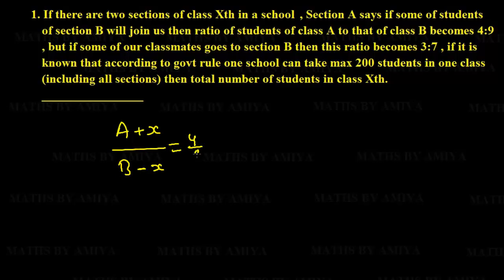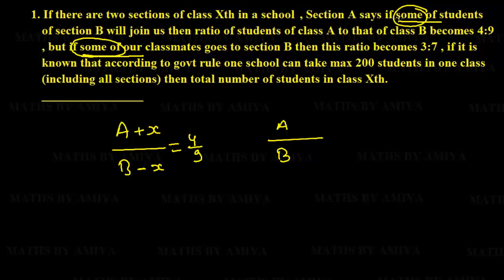But if some of our classmates go to section B, then the ratio becomes 3 to 7. We do not know how many transfer in each case. It is also given that according to government rules, one school can take a maximum of 200 students in one class including all sections. The total number of students in class 10th is to be found.